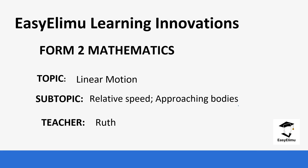Welcome to EZLE Learning Simplified. My name is Ruth and today we are going to be learning from Form Two mathematics, and our topic for the day is linear motion. We're going to be looking at relative speed for bodies that are approaching each other. When we talk about bodies, it can be people or vehicles. We're going to look at examples and see how we do that.